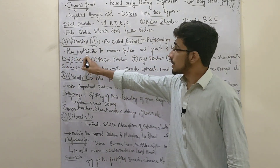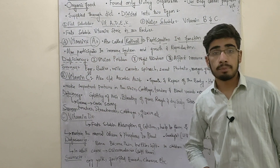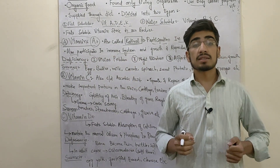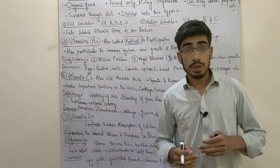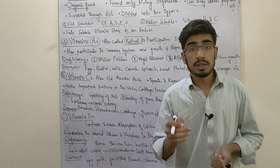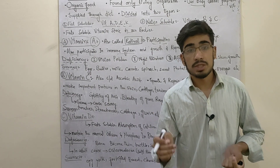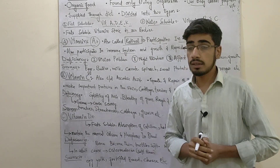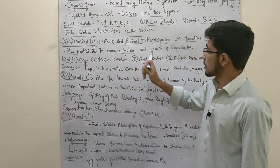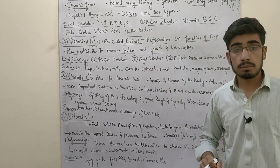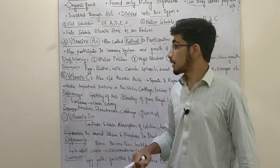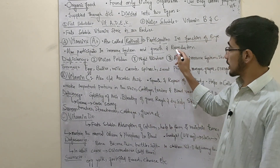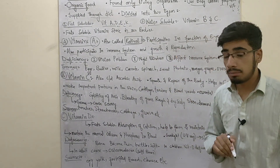Vitamin A also participates in the immune system. The immune system protects against pathogens — microbes, bacteria, fungi, and viruses. It also participates in the growth of cells, multiplication, and reproduction of cells.